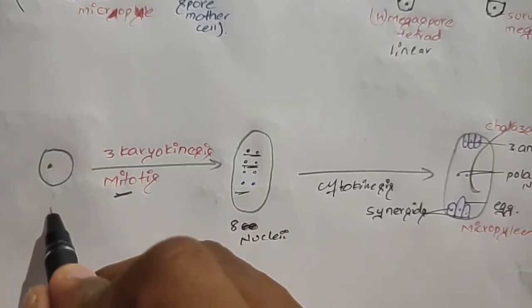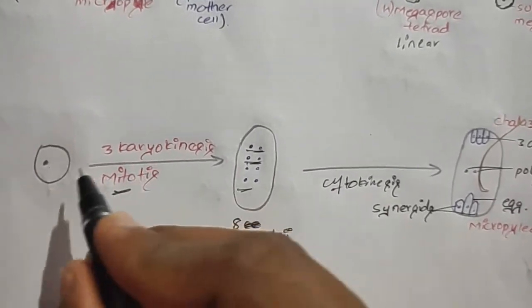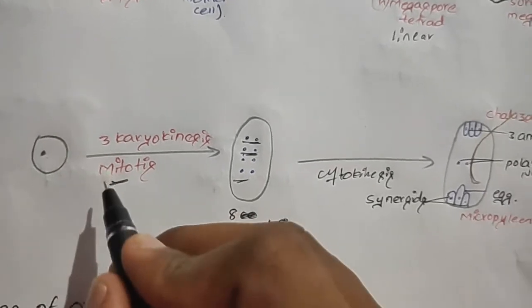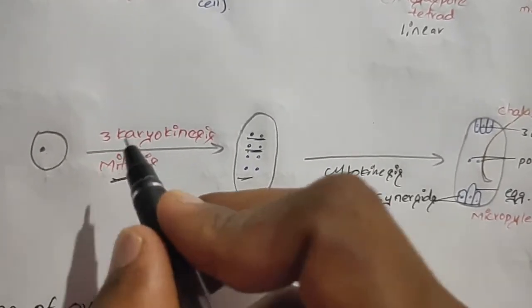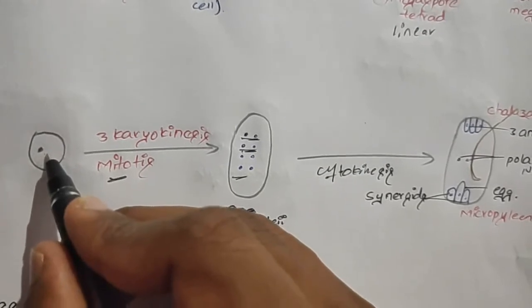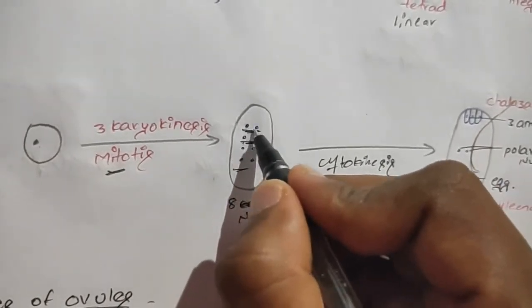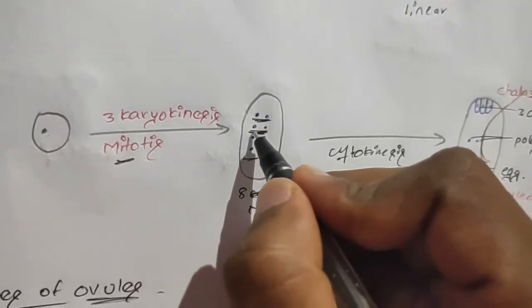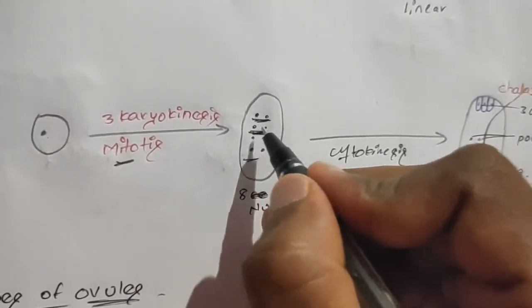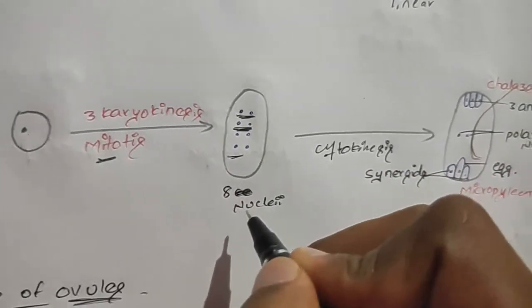The surviving megaspore undergoes mitotic division. First it undergoes karyokinesis, meaning only the nucleus divides and cytoplasm distribution does not take place. The nucleus divides three times: the first division forms two nuclei, the second forms four nuclei, and the third division results in a total of eight nuclei.